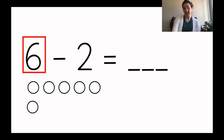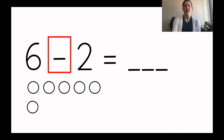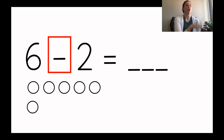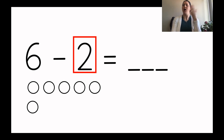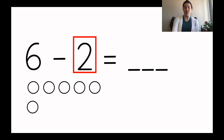I drew six circles because there are six to start in my group. Now I see the minus sign. Minus means that I'm going to have to show them going away, so I'm going to cross them off. How many will I cross off? I'll cross off two because it says six minus two. I crossed off two.